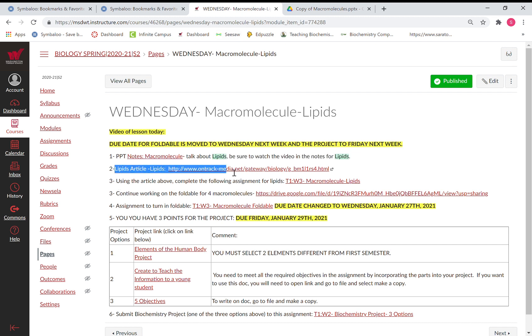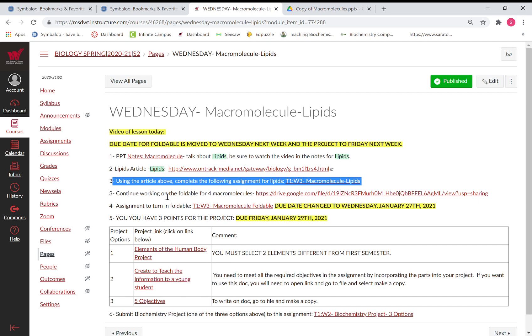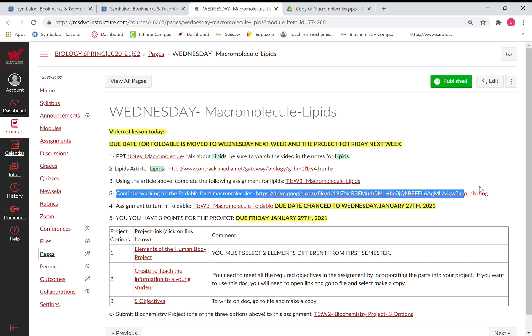And let's go back to current lessons so we can see what else is on our list. You have an article to read here. You also have this information here to complete. You're going to continue working on your foldable.